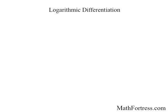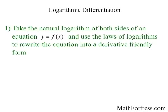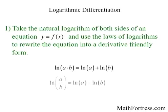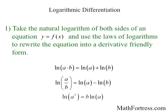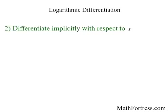The steps required for logarithmic differentiation are as follows. First, take the natural logarithm of both sides of the equation y equals f of x, and use the laws of logarithms — specifically the product-to-sum law, the quotient-to-difference law, and the exponent-to-multiplier law — to rewrite the function. Second, differentiate implicitly with respect to x. And lastly, solve the resulting equation for y prime, or dy over dx.